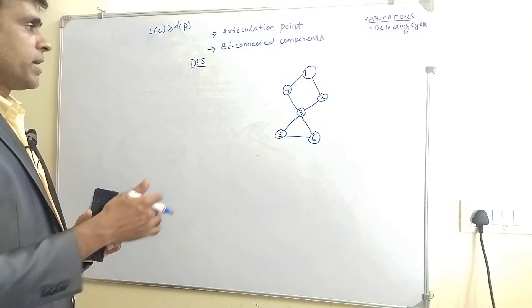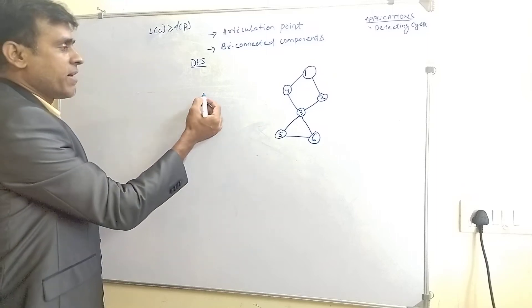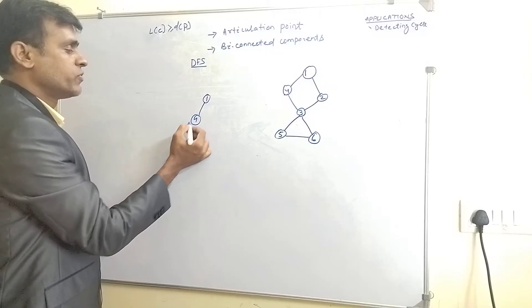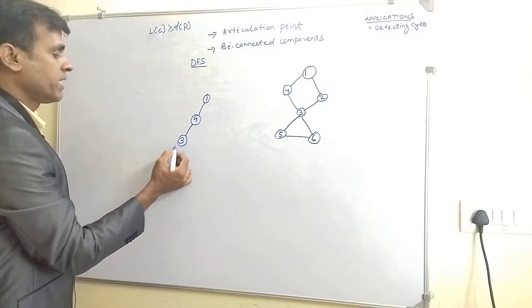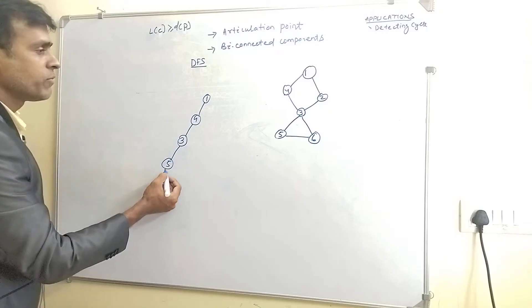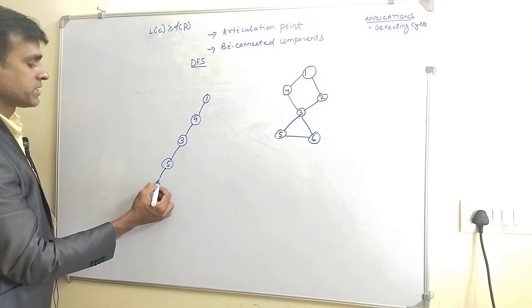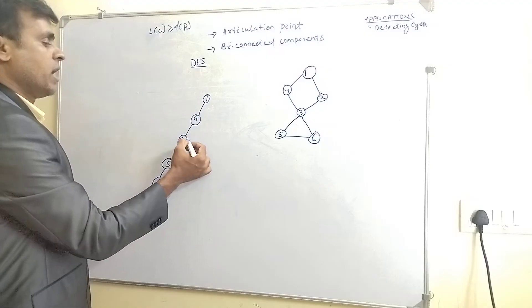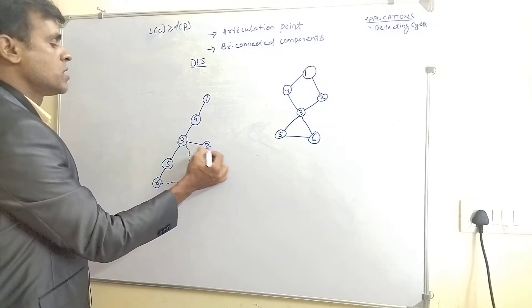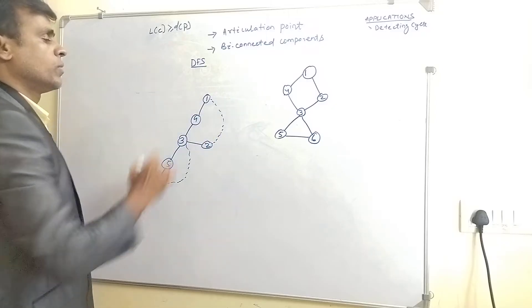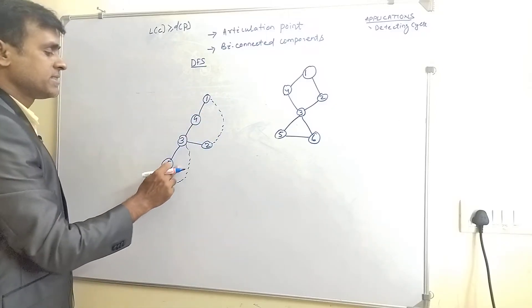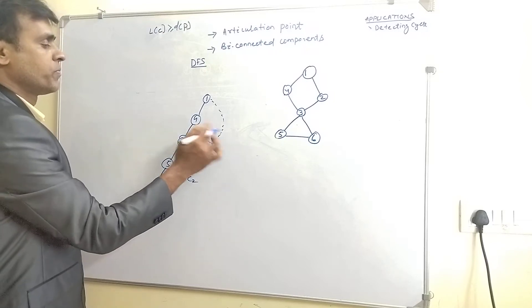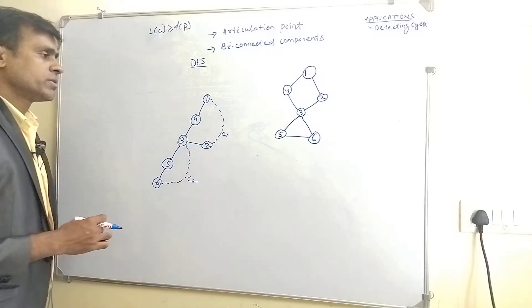Now we will perform a DFS traversal of the spanning tree. Starting from node 1, we discover node 4, then node 3, then node 5, then node 6. There is an edge from 6 to 3, from 3 to 2, and from 2 back to 1. This forms one cycle, and there is another cycle, so we label them cycle C1 and cycle C2.